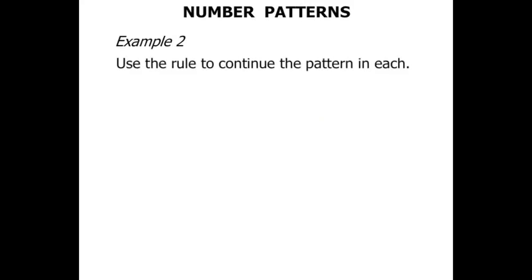Example 2: Use the rule to continue the pattern in each. So this time we've got a rule and we've got a first number we're starting with. So we're starting with 12. The rule is to add 5. So 12 plus 5 is 17. From 17 we add 5 we get 22. We're at 22, now we need to add 5 and we get 27.